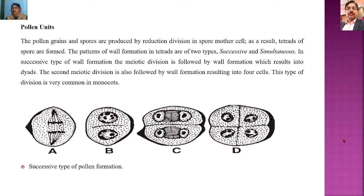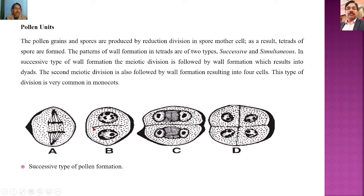In the successive type of wall formation, the first meiotic division is immediately followed by wall formation, which results in two dyads. The second meiotic division is also followed by wall formation, resulting in four cells. This type is very common in monocots. As shown in the diagram, the single cell undergoes meiotic division; the first division is followed by wall formation, then the second meiotic division occurs and is also followed by wall formation. So four spores are formed, each with their own independent wall.